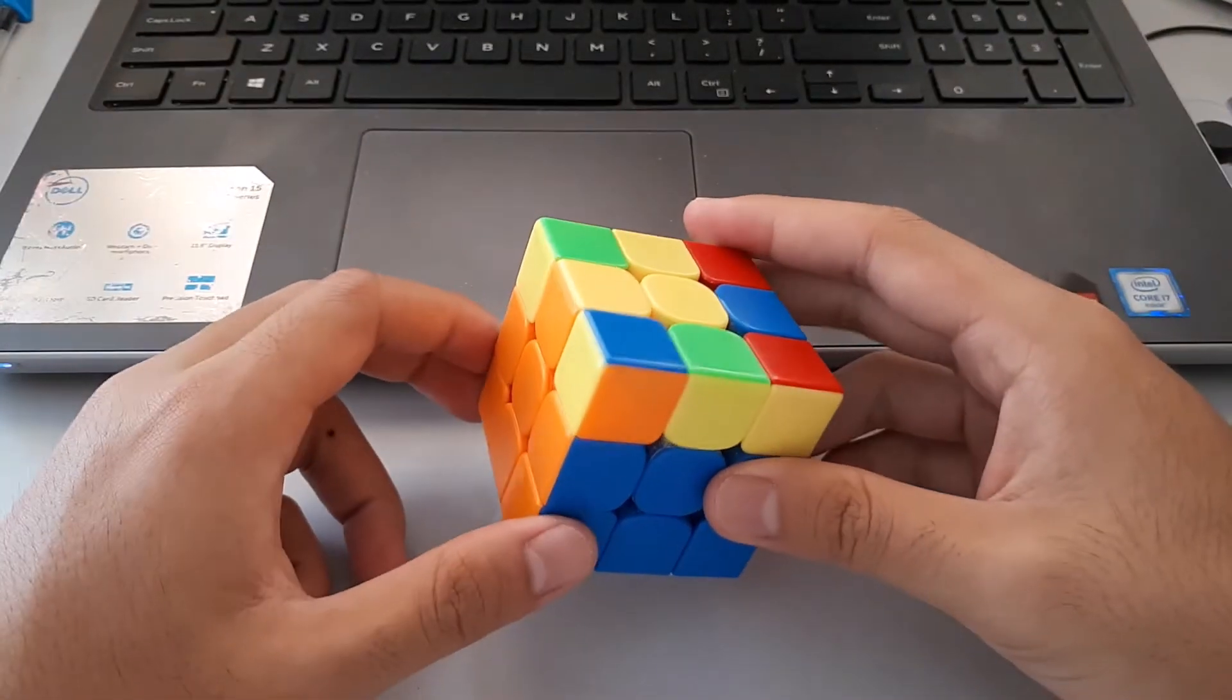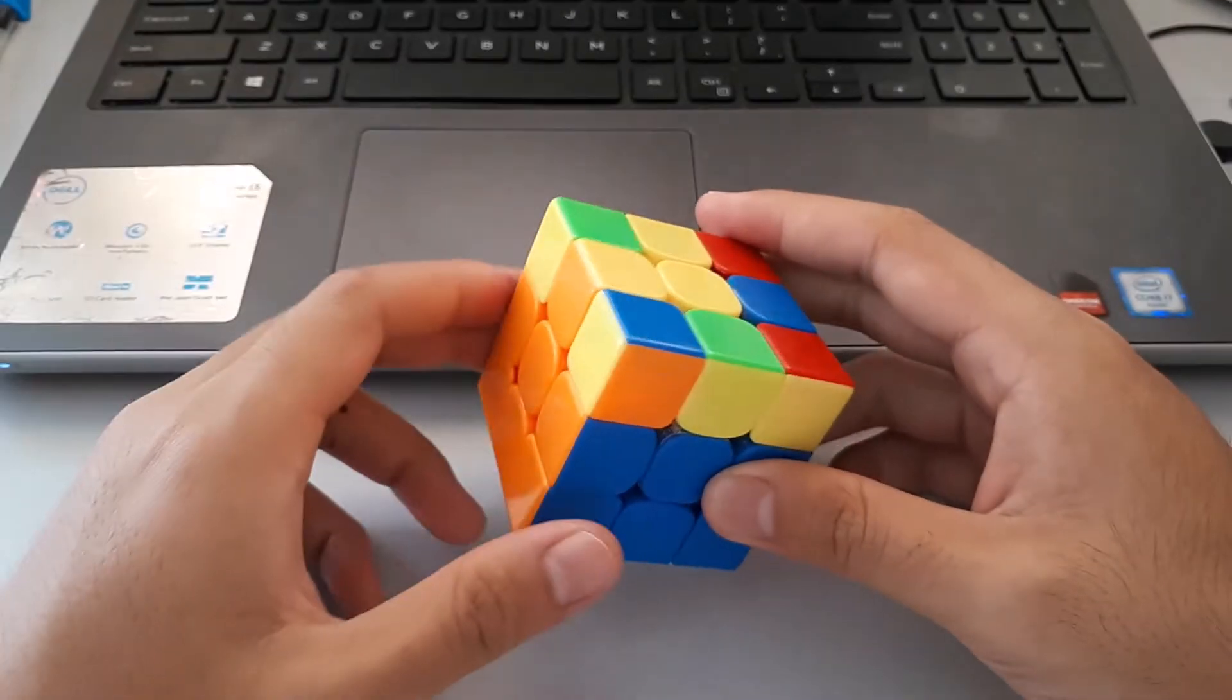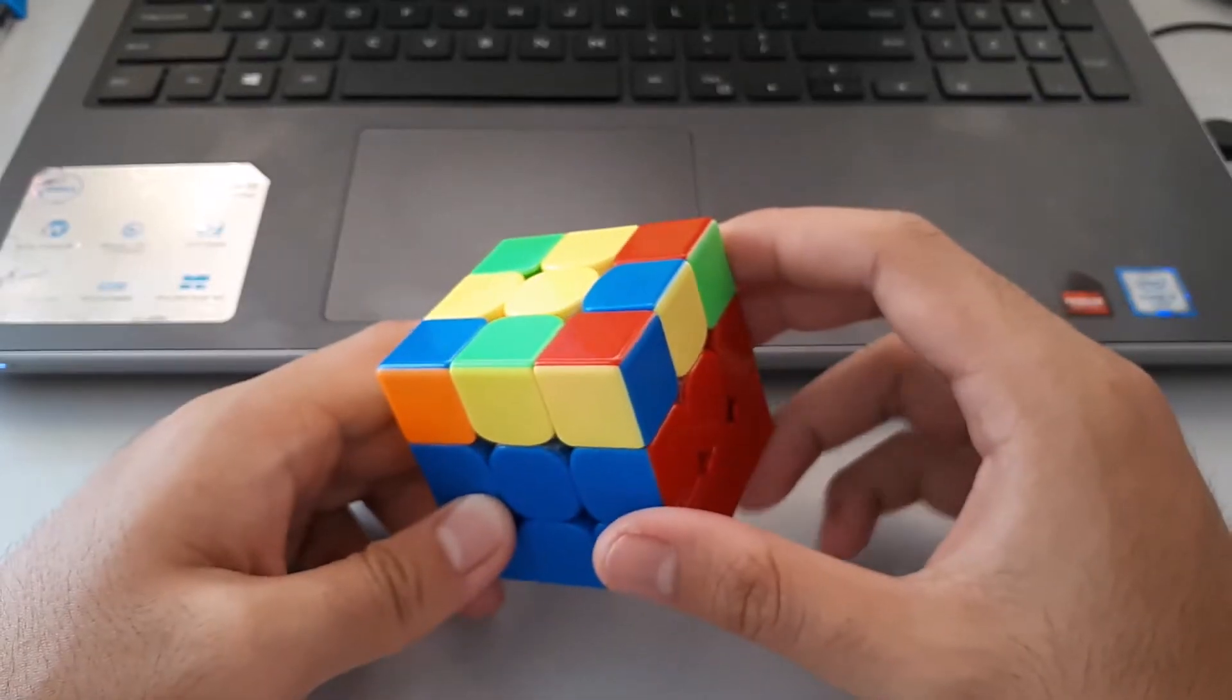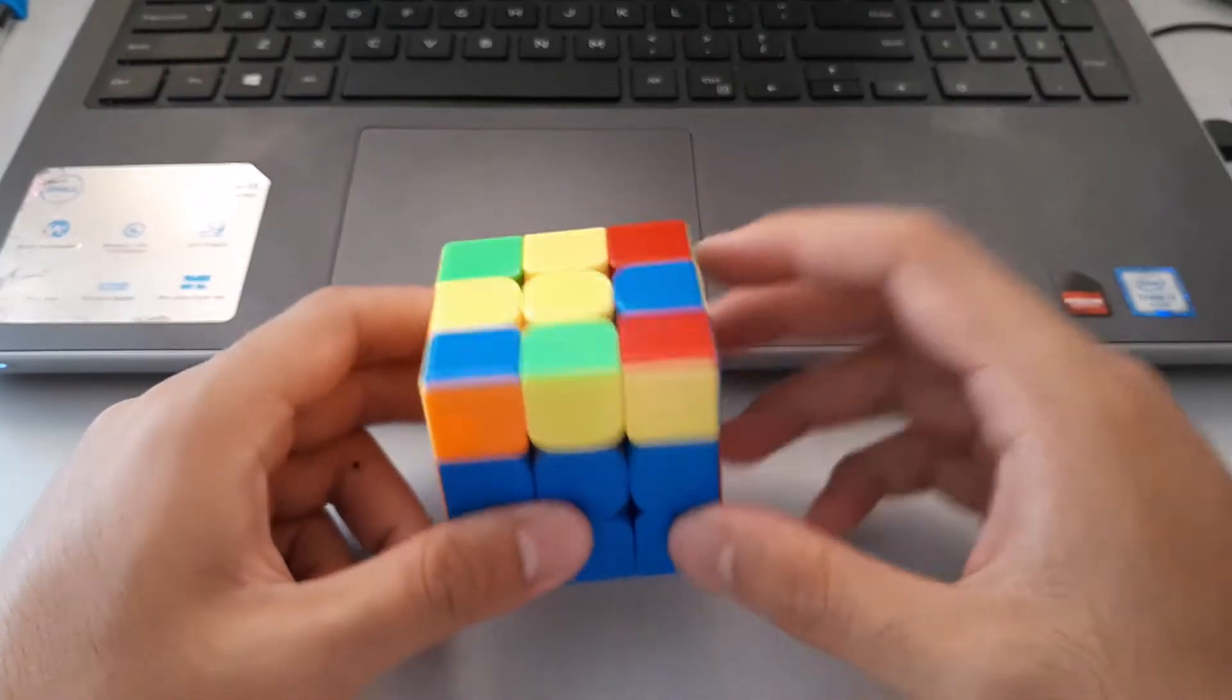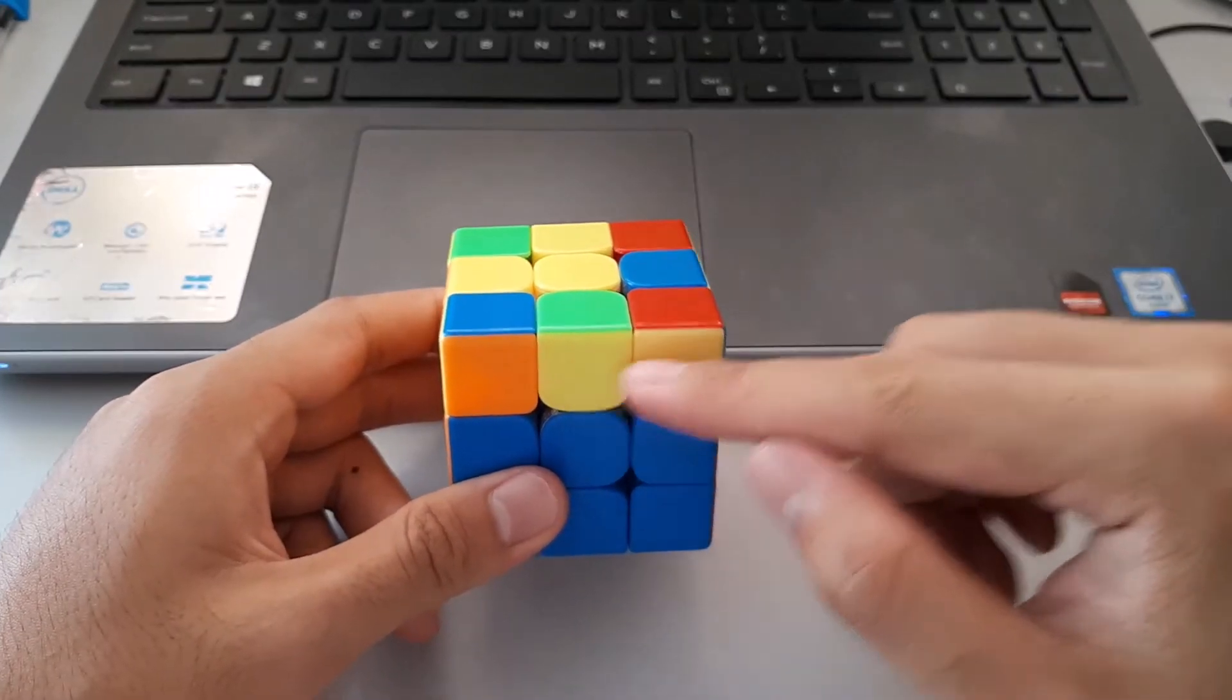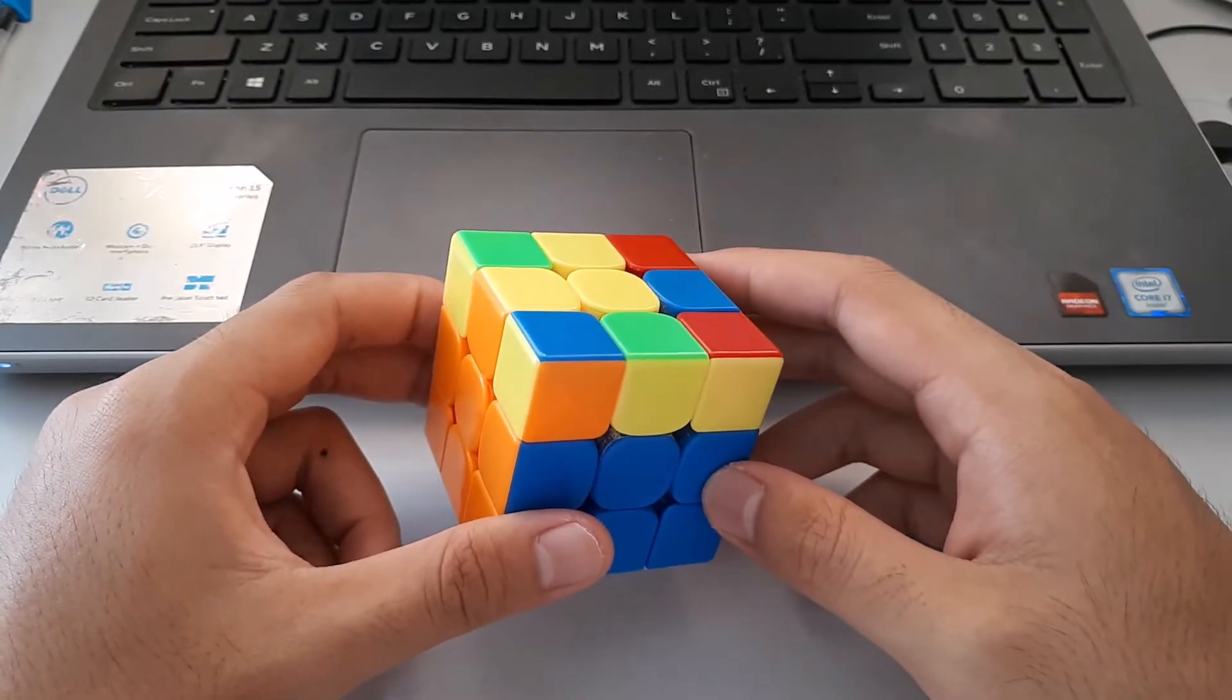So for the first L case, this one here, you may notice that it has headlights, but the important part is actually this 2x1 bar here. So when we see the 2x1 bar, we want to hold it at the front, like this. And because the bar is on the right hand side of the cube, we want to use our right hand for this algorithm.